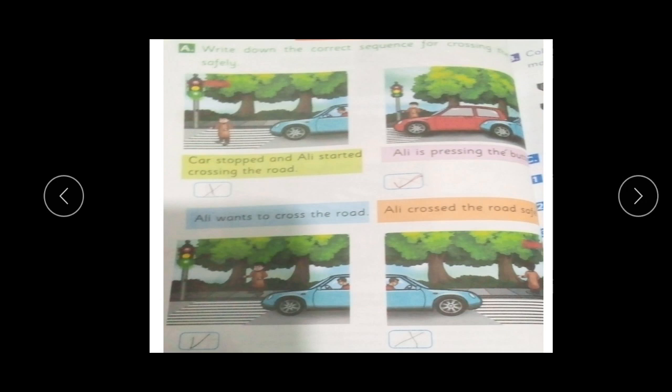So you have this chart given. You have to understand: car stops and Ali started crossing the road, and Ali is pressing the button. Ali has pressed the button, Ali wants to cross the road.